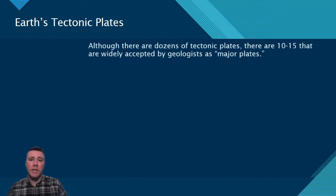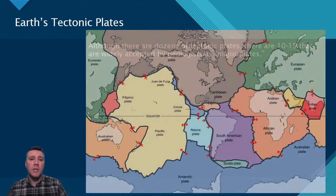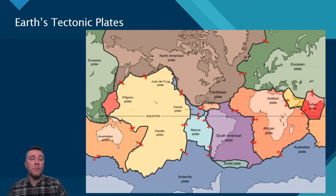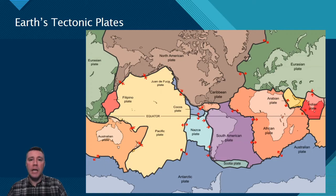There are many dozens of tectonic plates, but only 10 to 15 are considered by most geologists to be major ones. This map illustrates the puzzle-like nature of those major tectonic plates. A huge portion of the Pacific Ocean rests on top of the Pacific Plate. Nearly all of Europe and Asia are on the Eurasian Plate. The North American and South American plates have sandwiched in between them the Caribbean Plate. Unlike the Pacific Ocean, the Atlantic Ocean straddles a number of plates. And because of where we live, the relatively small Juan de Fuca Plate, just off the west coast of the Pacific Northwest, holds special significance.